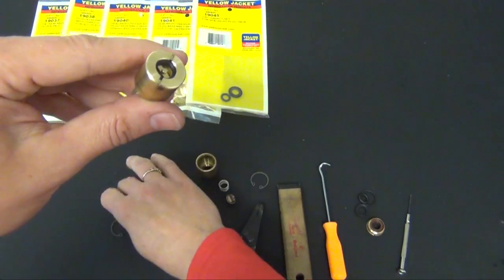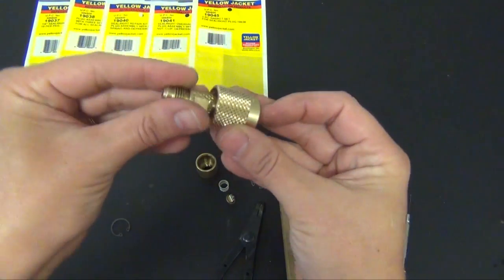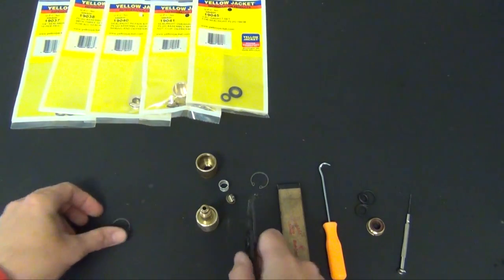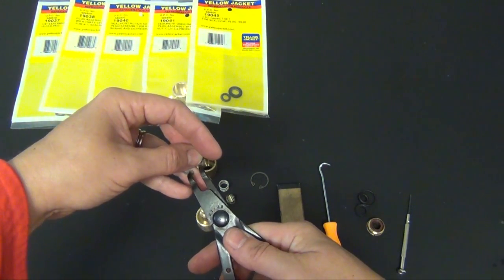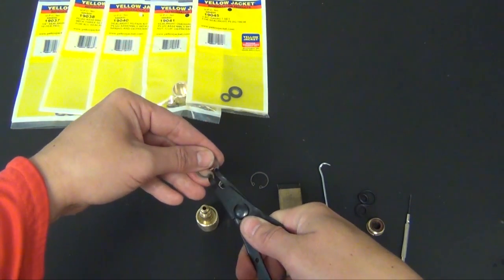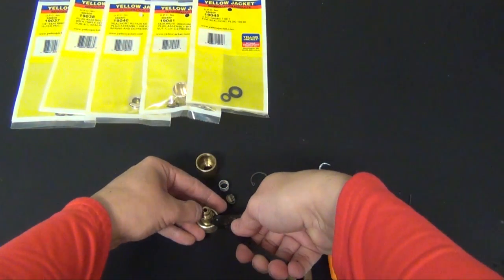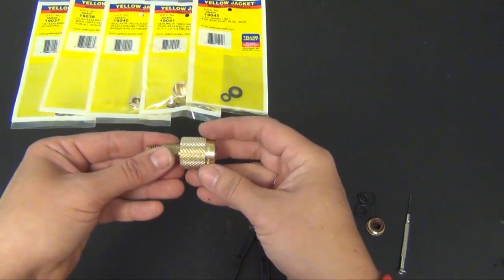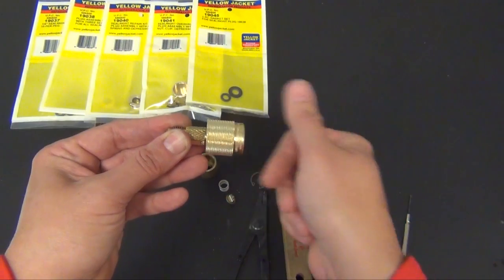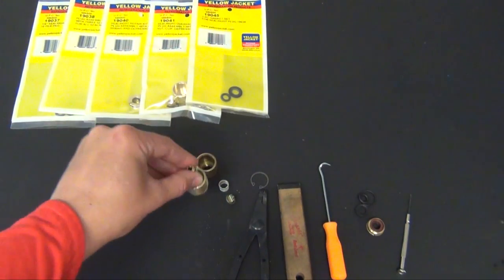Then you would either take your existing nut or the new nut, slide it on and again taking your snap ring pliers we're going to replace the C-clip and then make sure that the nut turns smoothly.